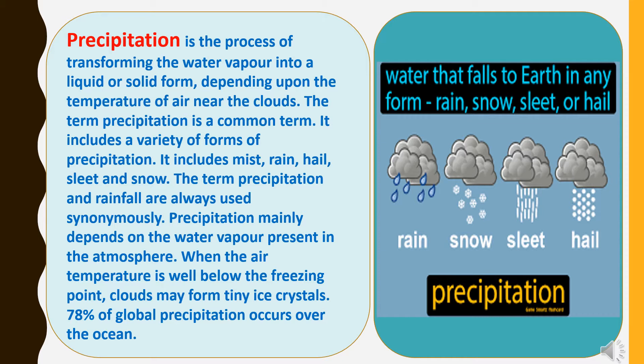When the air temperature is well below the freezing point, clouds may form tiny ice crystals. 78% of global precipitation occurs over the oceans.